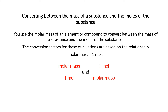Converting between the mass of a substance and the moles of the substance: you use the molar mass of an element or compound. The conversion factors for these calculations are based on the relationship that the molar mass of the substance is equal to 1 mole. Using that relationship, we can have two conversion factors: molar mass over 1 mole, and also 1 mole over molar mass.